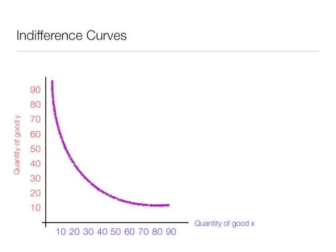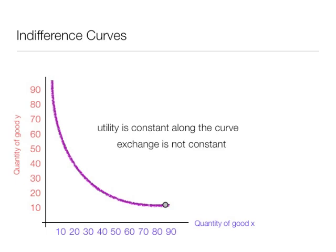Along an indifference curve, the purple line, utility is constant along the curve. That means you're equally happy anywhere along this curve. But exchange is not constant. The way you substitute y for x is not constant.